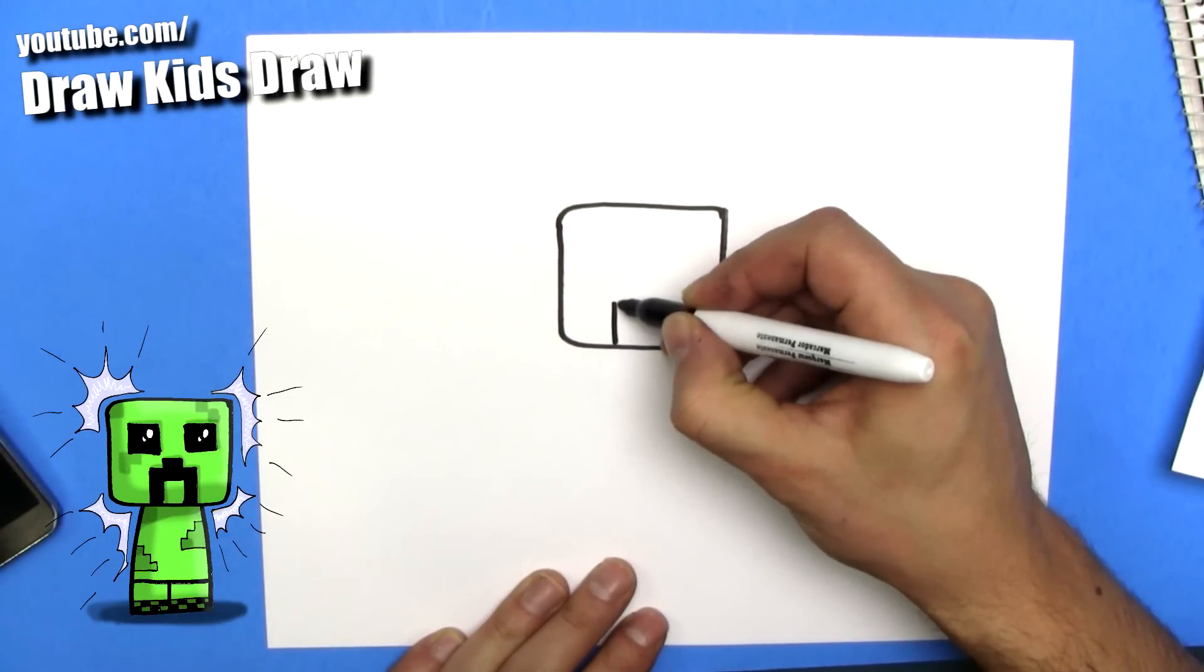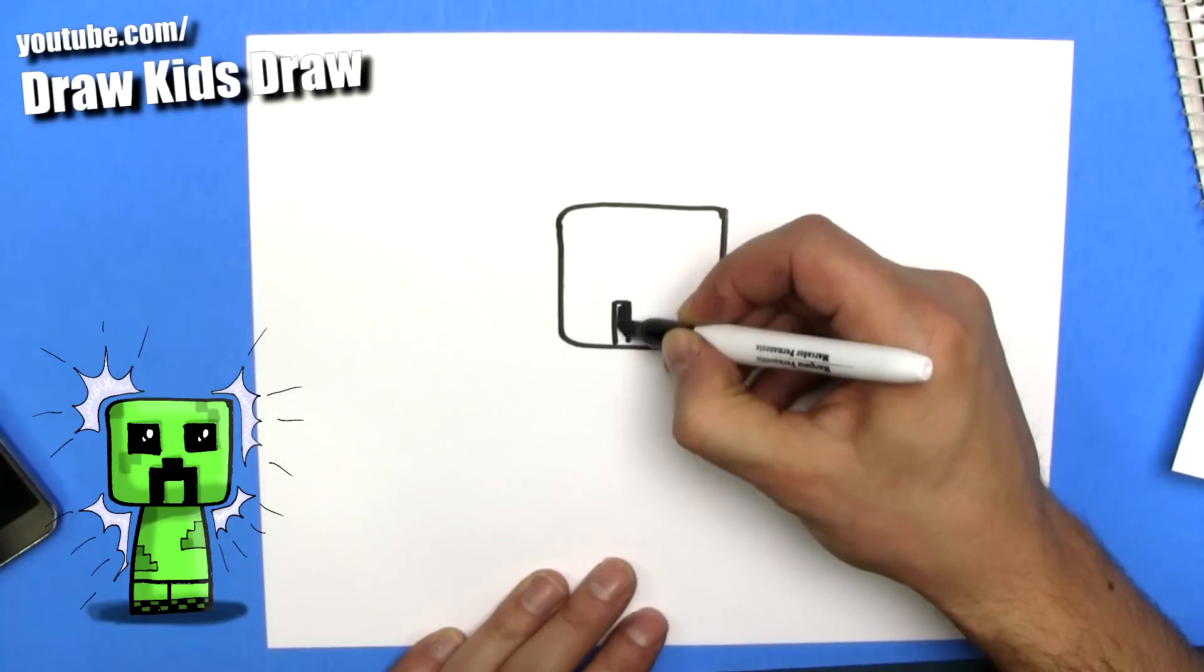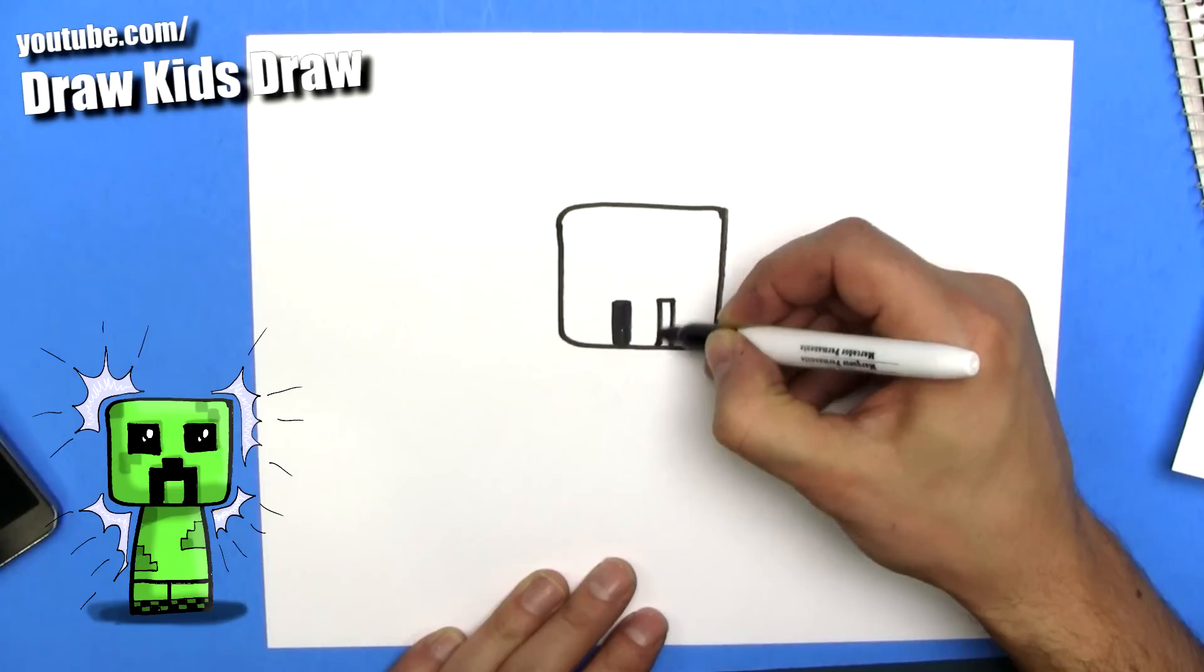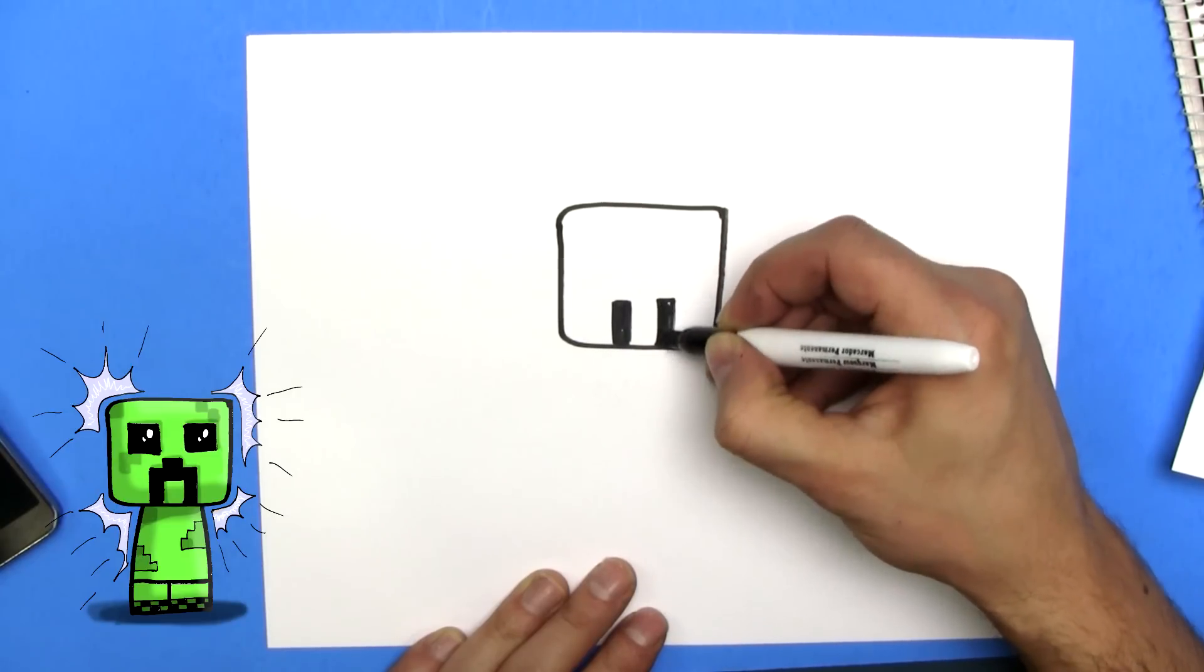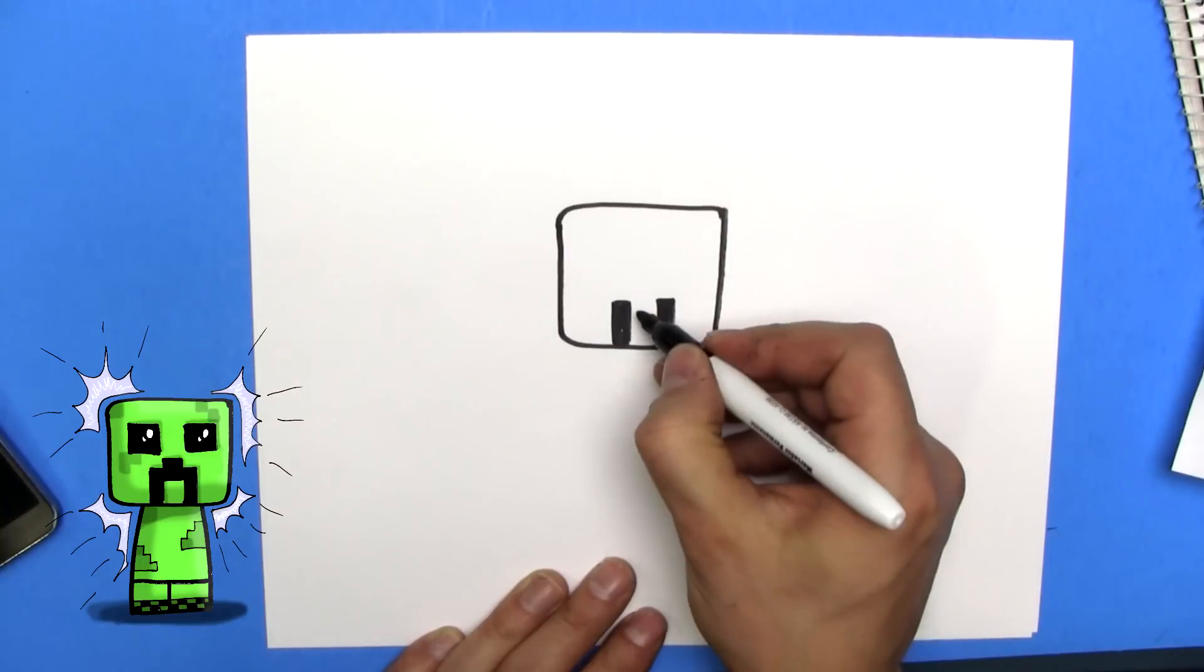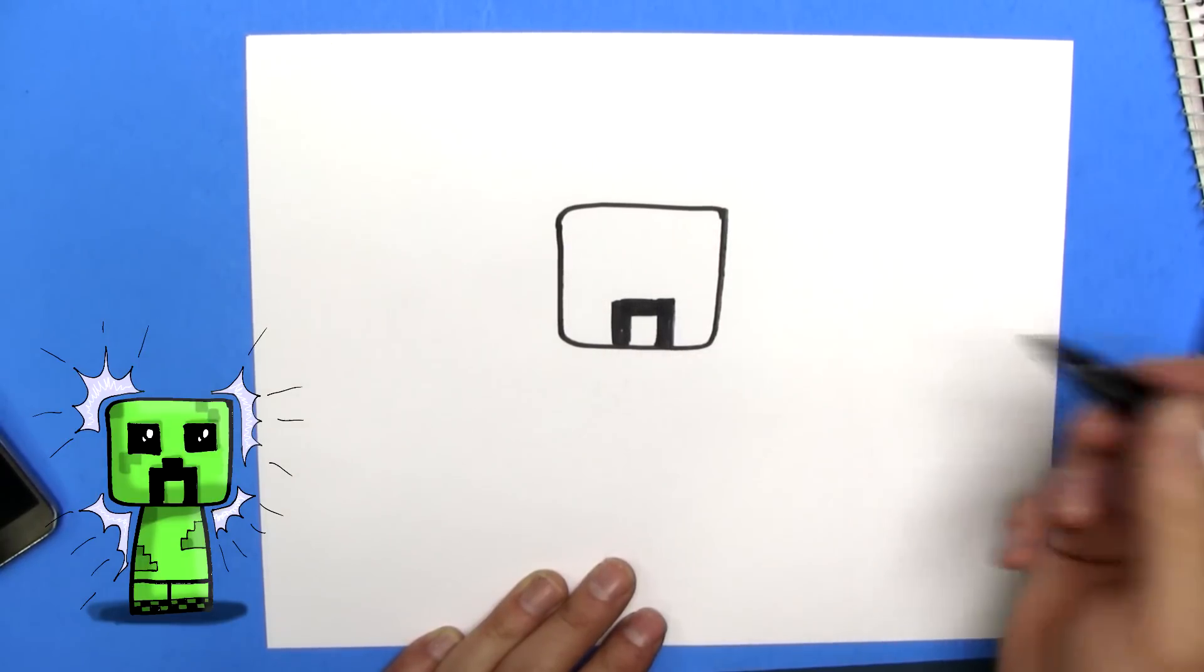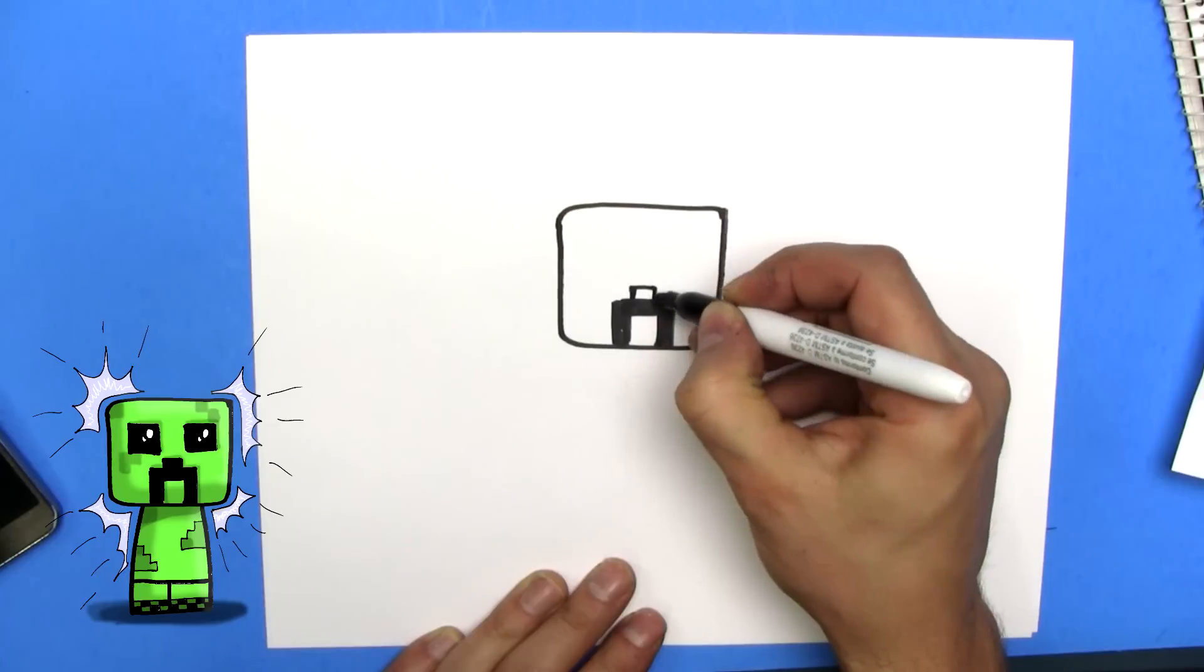Then we're going to make the shape of his mouth. We're going to put two rectangles, like this, like that, and then we draw a line joining across, and color that in, and then put a bump on top.